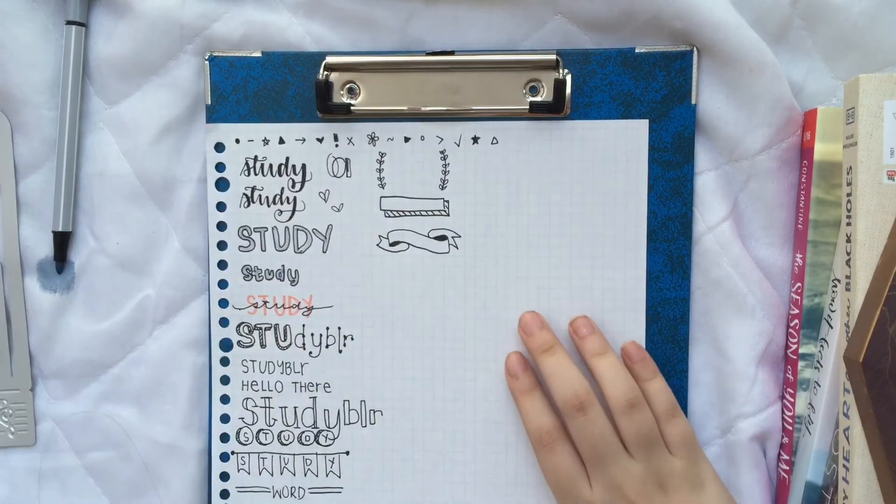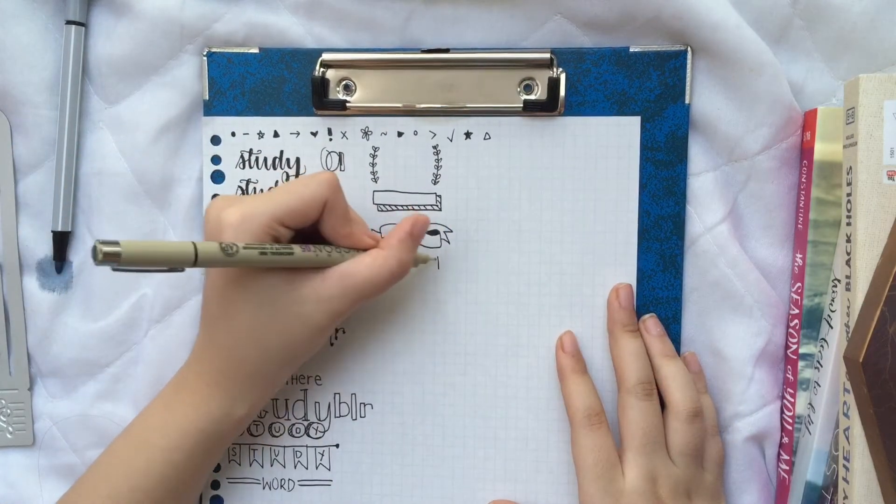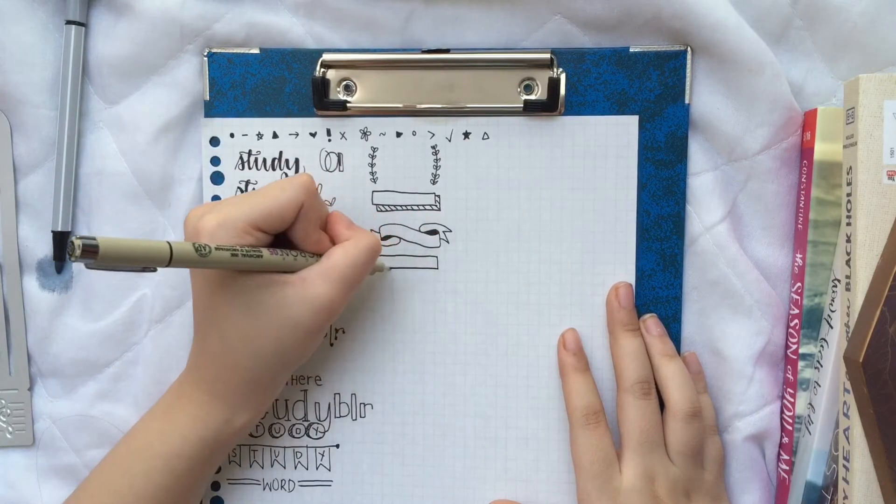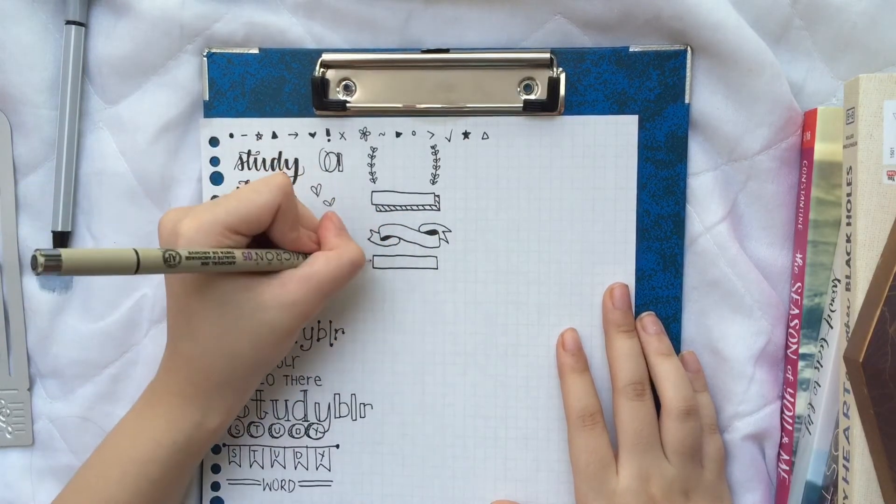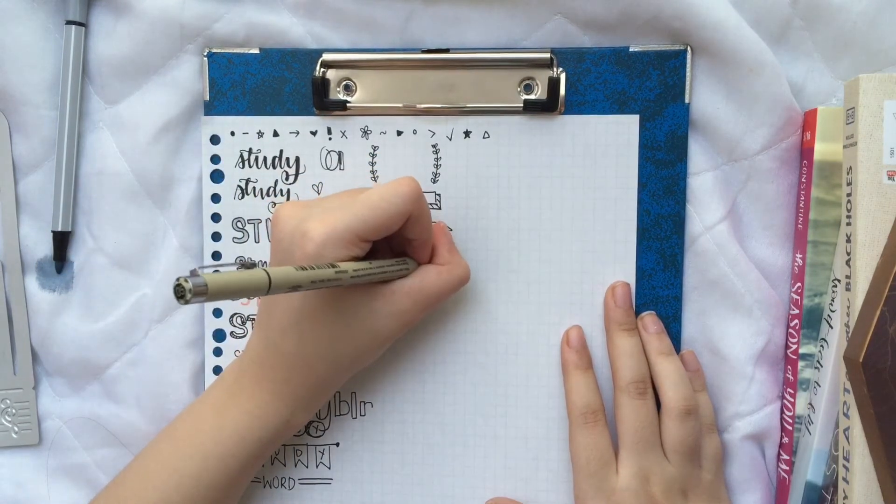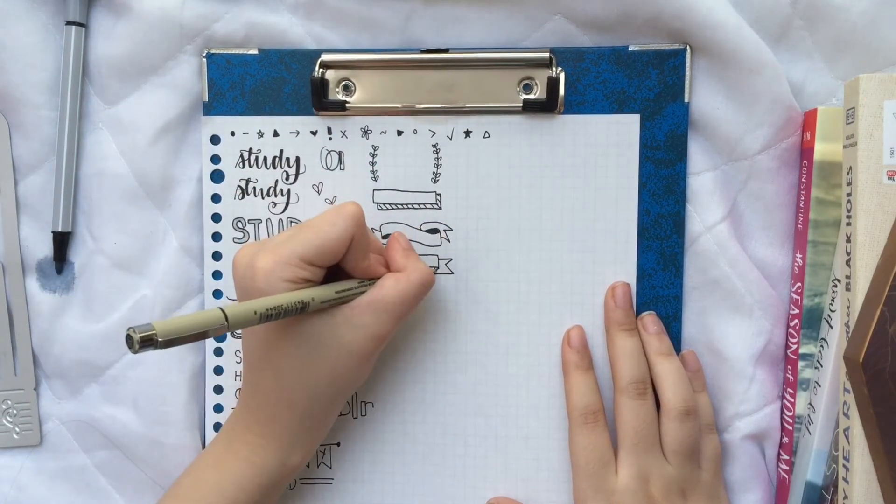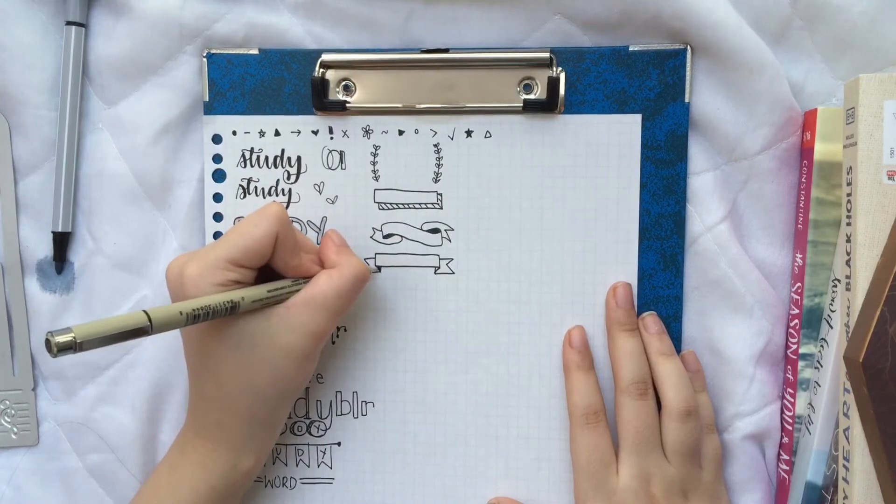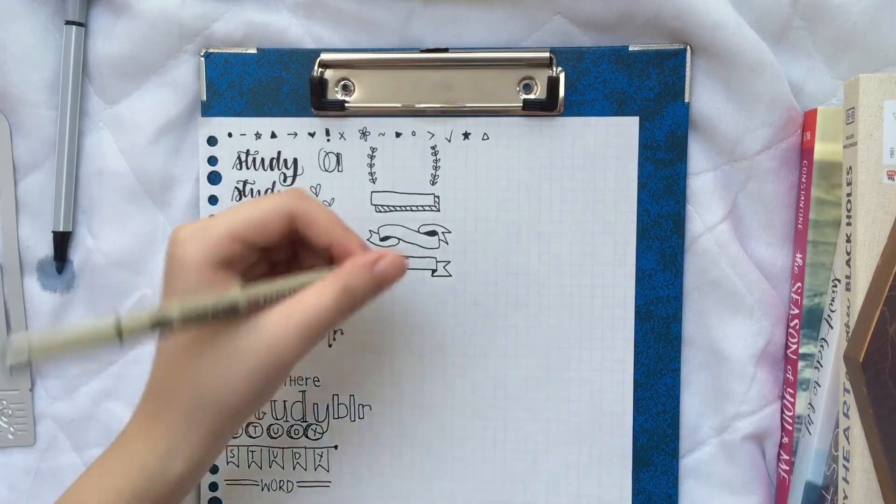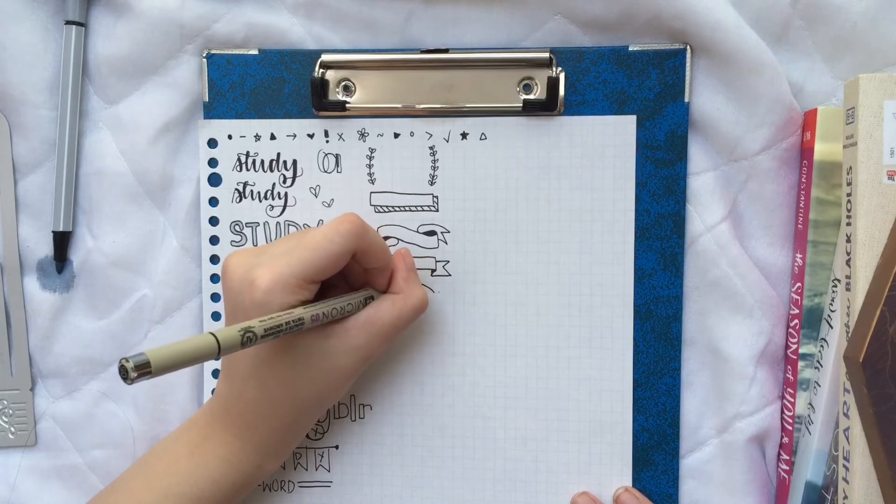And then if you all don't like this curvy banner, you can also do a similar style with just a straight one. And then do a slash here, slash, and then just shade that in. You can also do this in a curved manner, like this.